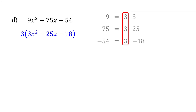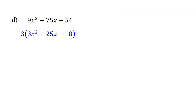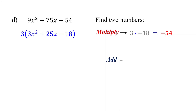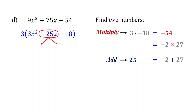Feel free to pause the video and give it a try. First, multiply the leading coefficient by the constant term, which equals negative 54. Then find two numbers that multiply to give negative 54 and add up to 25. We know that 2 times 27 equals 54. But if we make 2 negative, they multiply to give negative 54, and when we add them, we get 25. So you have found the two numbers. The next step is to split 25x using these numbers, which can be written as negative 2x plus 27x. The other terms stay the same, and 3 comes along for the ride.